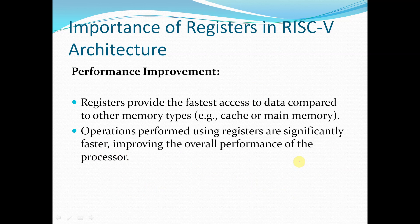In RISC-V architecture, registers provide the fastest access to data compared to other memory types such as cache or main memory. Data stored in registers is used by the ALU, and any component can access this data from the registers very easily. Operations performed using registers are significantly faster, improving the overall performance of the processor.